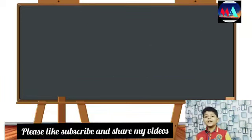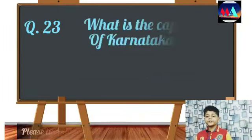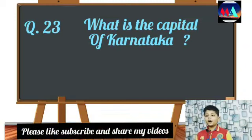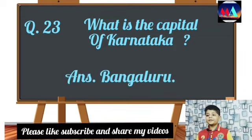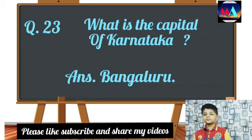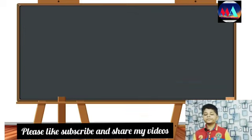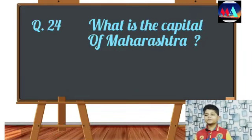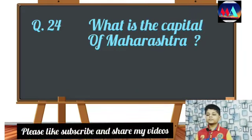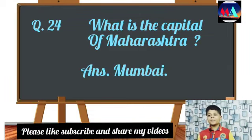Question number twenty-three: What is the capital of Karnataka? Answer: Bengaluru. Question number twenty-four: What is the capital of Maharashtra? Answer: Mumbai.